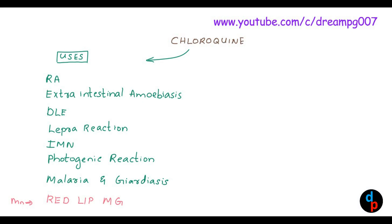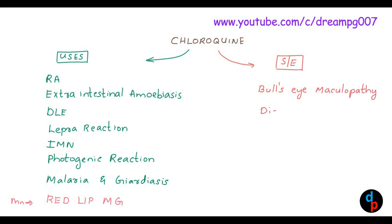This drug causes many side effects. The most important side effect is bullseye maculopathy. It can also cause discoloration of the nails. This drug also precipitates porphyria.